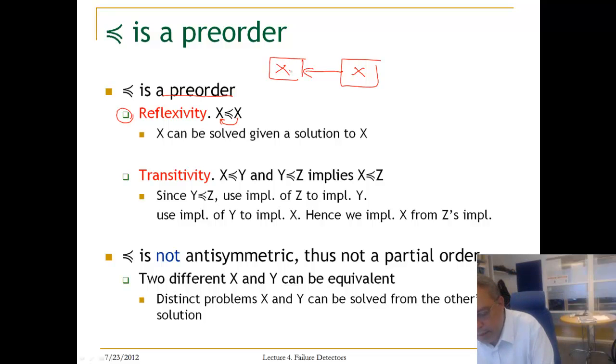Reducibility is transitive because given a solution of X using Y, and given a solution of Y using Z, then we can use the implementation of Y and Z to implement X. That is transitivity. So reducibility is transitive.